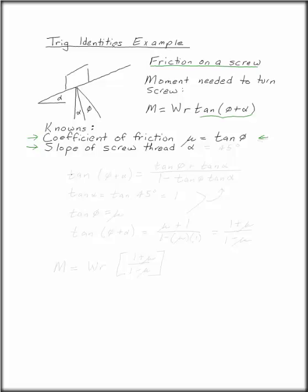In this case, mu is tan phi. This is a given from friction. And we're told for this particular problem that alpha is 45 degrees.